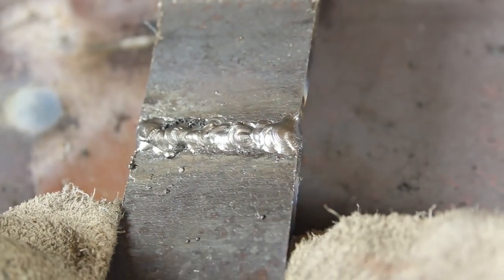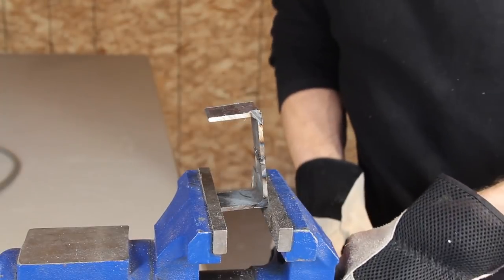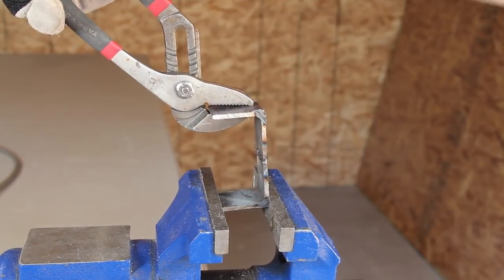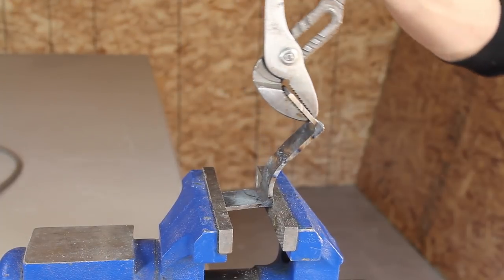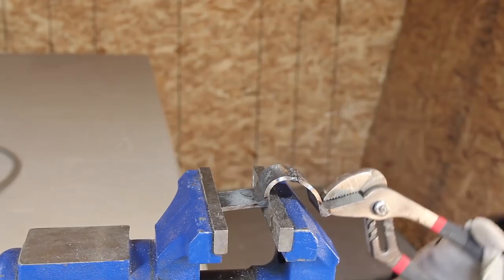Now it looks good to me, but I've never really welded before, so I'm not sure how to tell if the weld is good or not. So let's break it. The piece gets clamped in a bench vise, and these channel lock pliers should give us the leverage we need. I'm actually expecting this will snap in the middle, but it didn't.